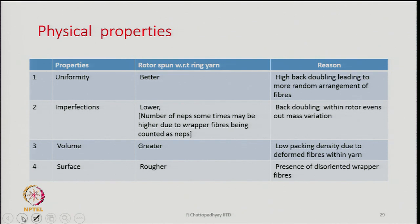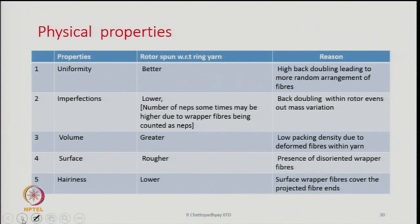The surface is generally rougher — there is much disorientation, belts are present, and the yarn is not smooth. Hairiness is lower because wrapper fibers cover the projected fiber ends and belts suppress many hairs, preventing them from projecting out.